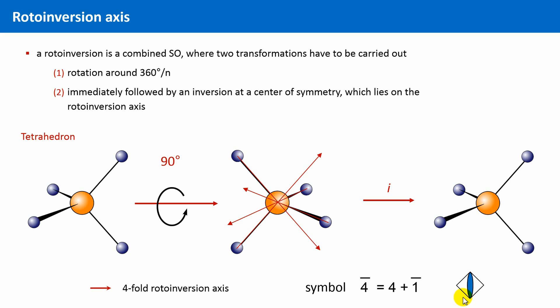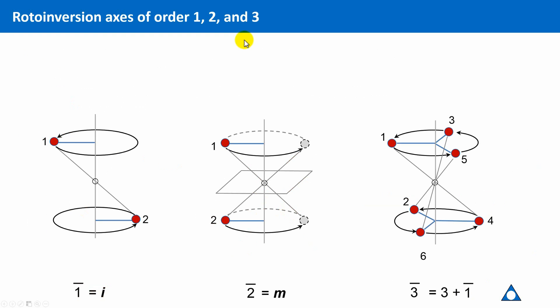Let's now look at the different rotoinversions which are crystallographically relevant, and these are the rotoinversions of the order 1 to 4 and 6. So, here you see three point assemblies which show rotoinversions of the order 1, 2 and 3. The first two are not very interesting,